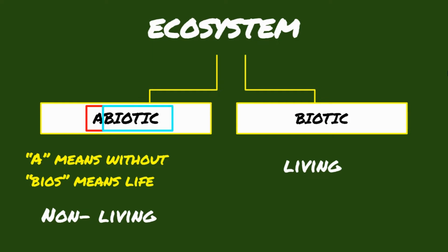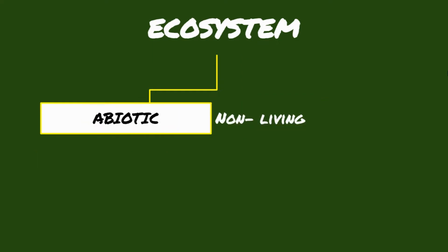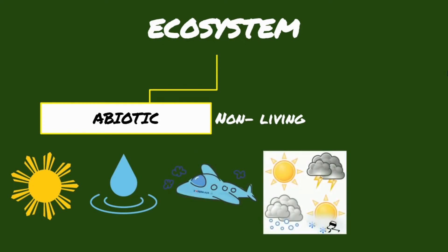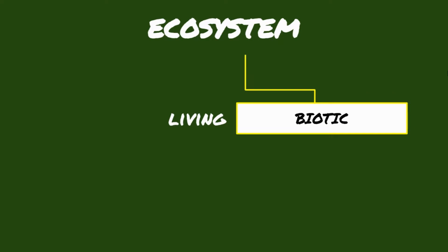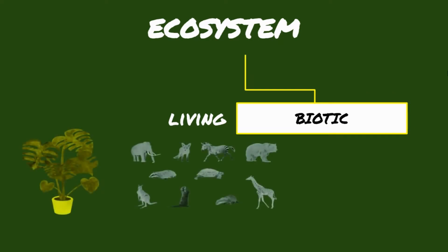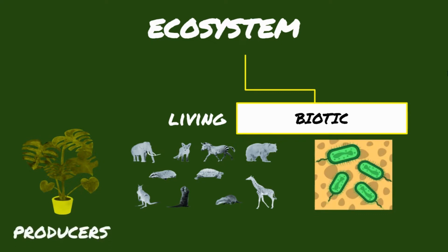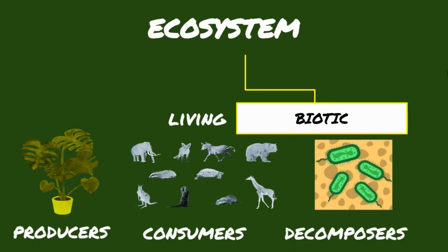Abiotic components include the sun, water, air, weather, rocks, and soil. Biotic components include various plants, animals, and bacteria that act as producers, consumers, or decomposers.